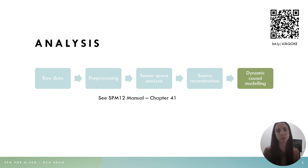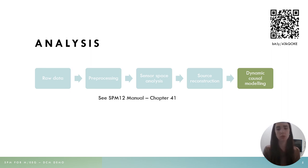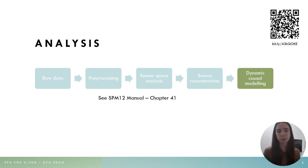However, if you do want to go over all the previous steps, you can download the raw data and follow the instructions in the SPM manual chapter 41, which will take you through the pre-processing, the sensor space analysis, and the source reconstruction as well. If you haven't already downloaded the data, please do it now using the QR code in the top corner because we're about to get started.